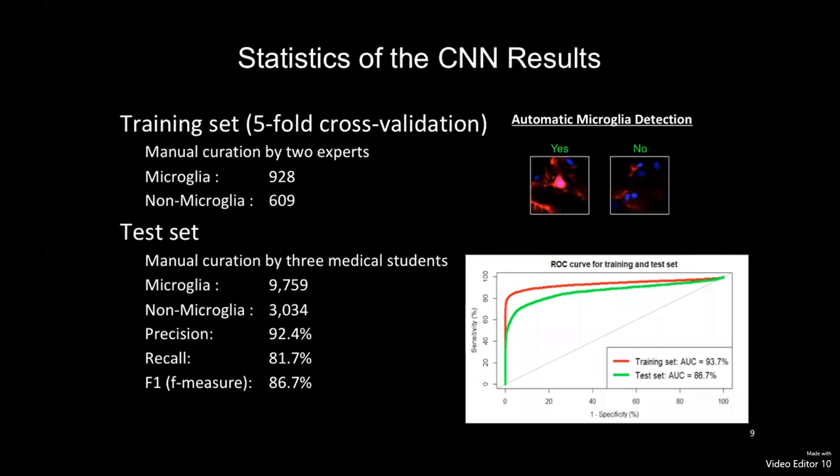We supplied 928 cells and 609 negative boxes for the training of our CNN model. The model was then used to analyze a test set of 10,000 cells and 3,000 negative boxes, where we achieved 92.4% precision, 81.7% recall, and 86.7% for the F-measure.